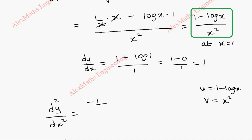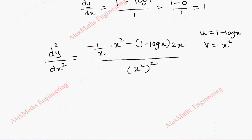So it is d square y by dx square is u dash, which is minus 1 by x, into v minus u times 1 minus log x into v dash is 2x, whole divided by v square. So x square, whole square. Anyway, we have to substitute 1.